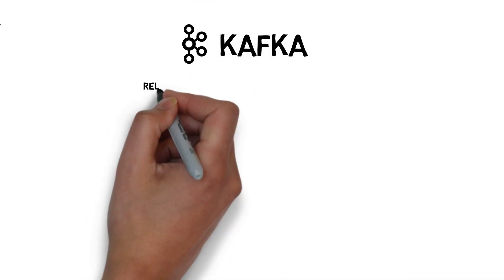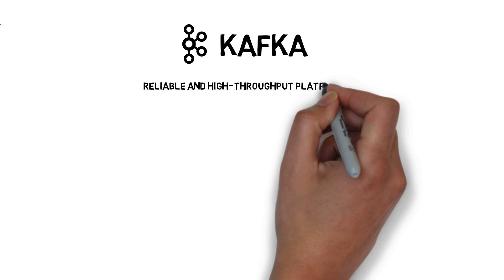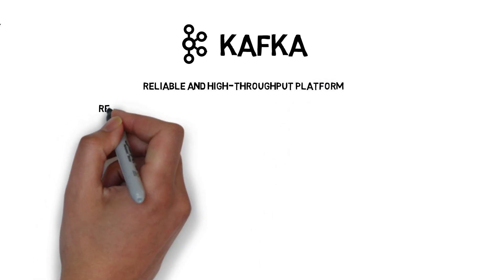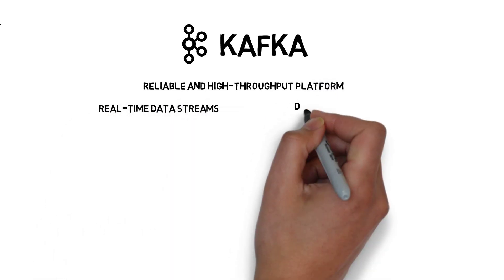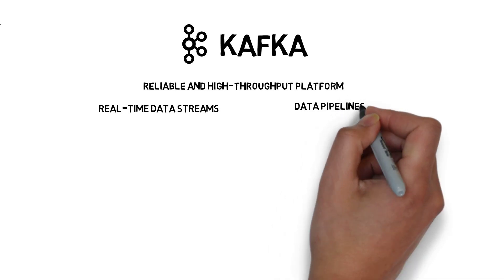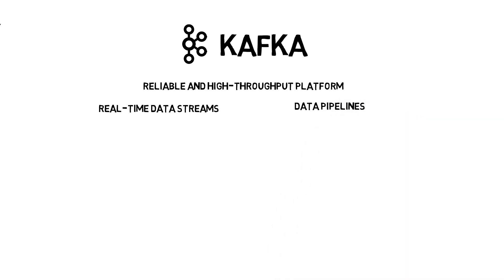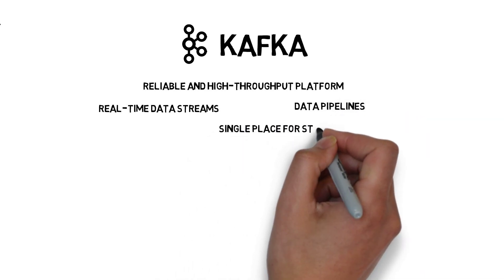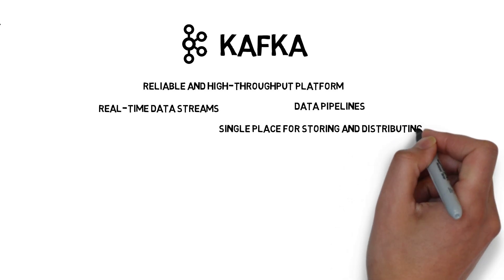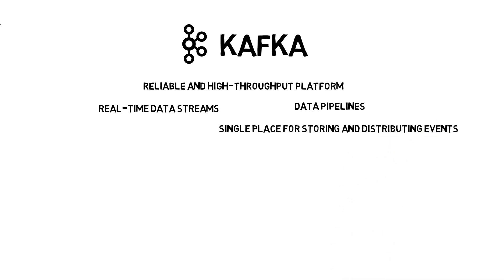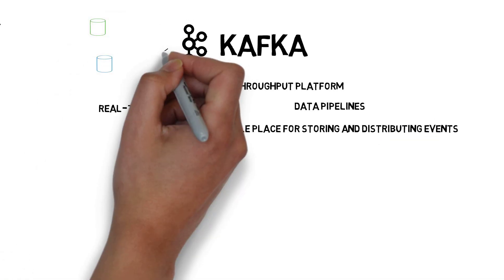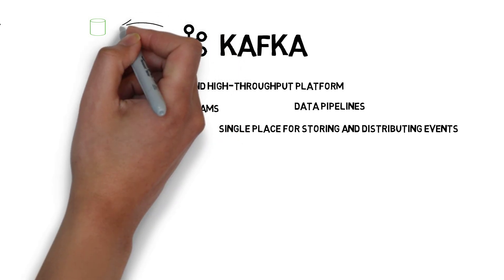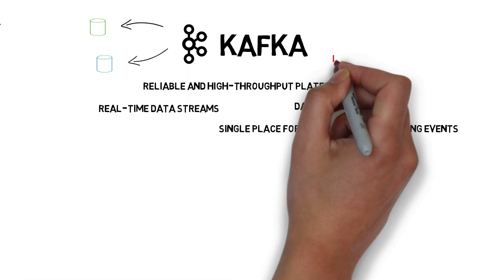Kafka aims to provide a reliable and high-throughput platform for handling real-time data streams and building data pipelines. It also provides a single place for storing and distributing events that can be fed into multiple downstream systems, which helps to fight the ever-growing problem of integration complexity.